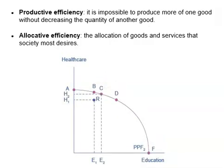The study of economics does not presume to tell a society what choice it should make along its production possibilities frontier. However, it can point out that some choices are better than others. This observation is based on the concept of efficiency. Efficiency often means there is no waste. In economics, there are two types of efficiency: productive efficiency and allocative efficiency.